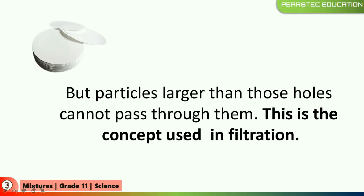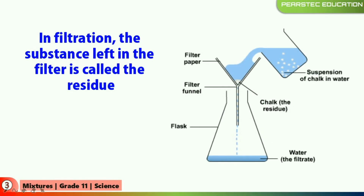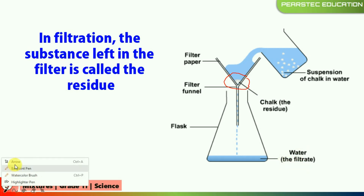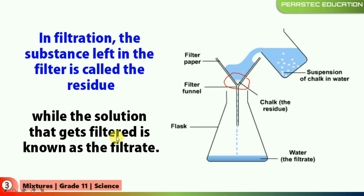In filtration, the substance left in the filter is called residue. For example, in a suspension of chalk in water — chalk and water are mixed — they make a filter, and the chalk pieces or chalk residue remain in the filter while the water that passes through is called the filtrate. So we get two new names: the solution that gets filtered is known as the filtrate, and what remains is the residue.